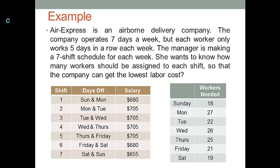I want to use an example to show you how to perform an integer optimization analysis. An operation manager is making a work schedule for a warehouse. This warehouse is open 7 days a week, but each worker can only work 5 days in a row each week. The manager wants to assign workers to different shifts and reach the goal of paying a minimum total labor cost. The table on the left shows which days each shift is off and the weekly salary for that shift.